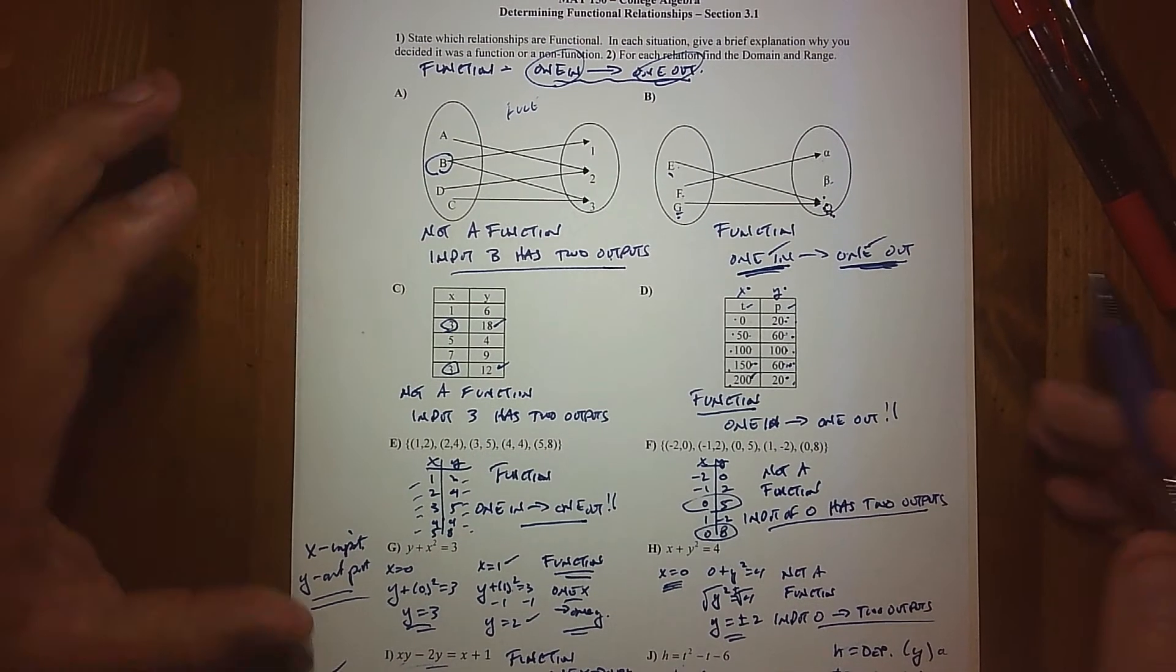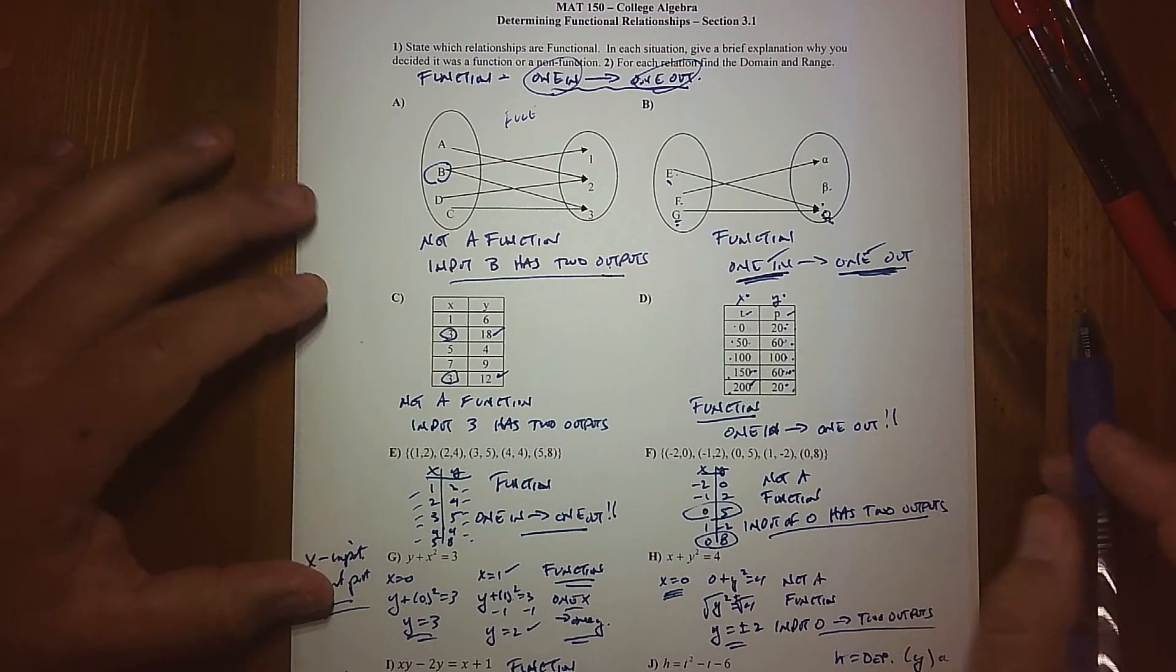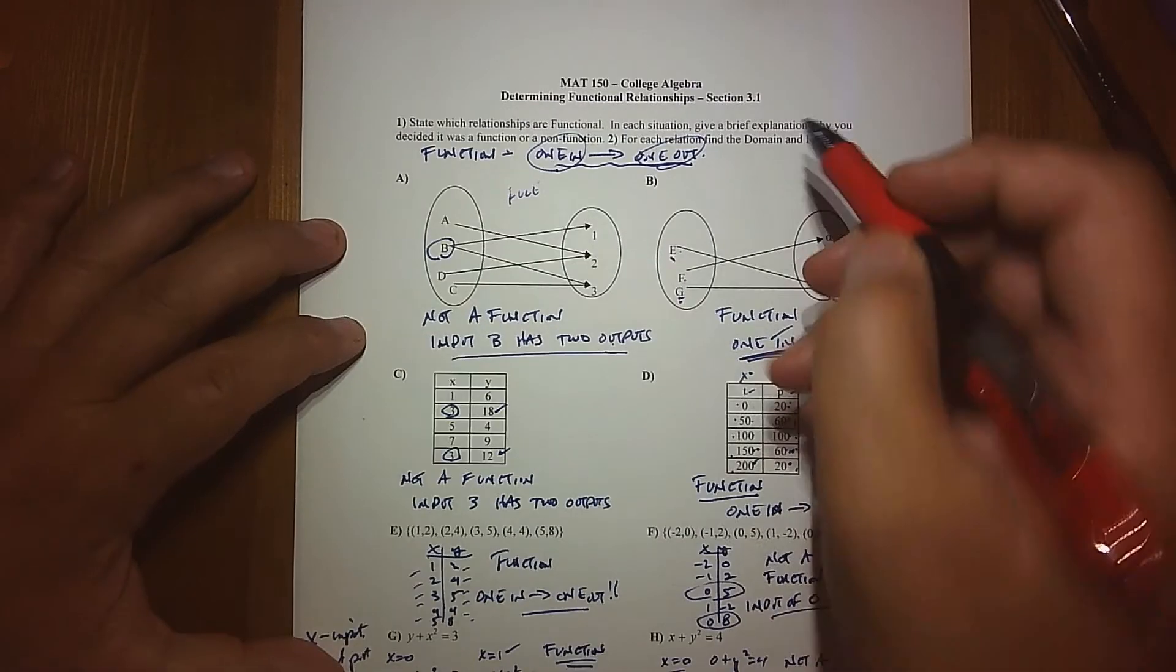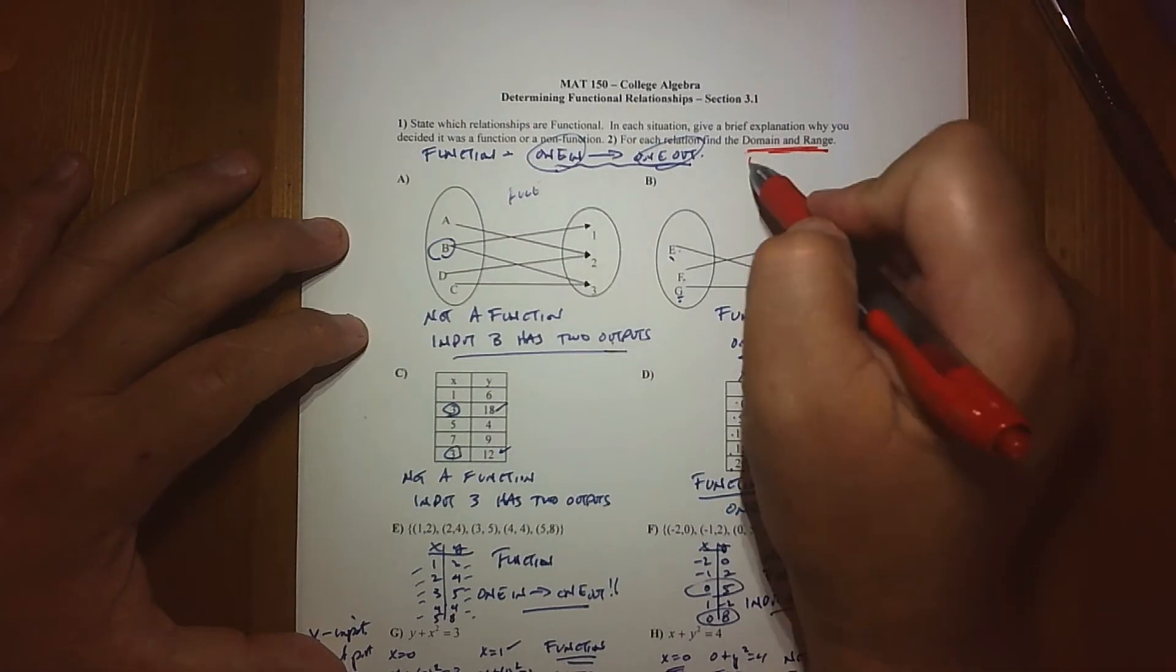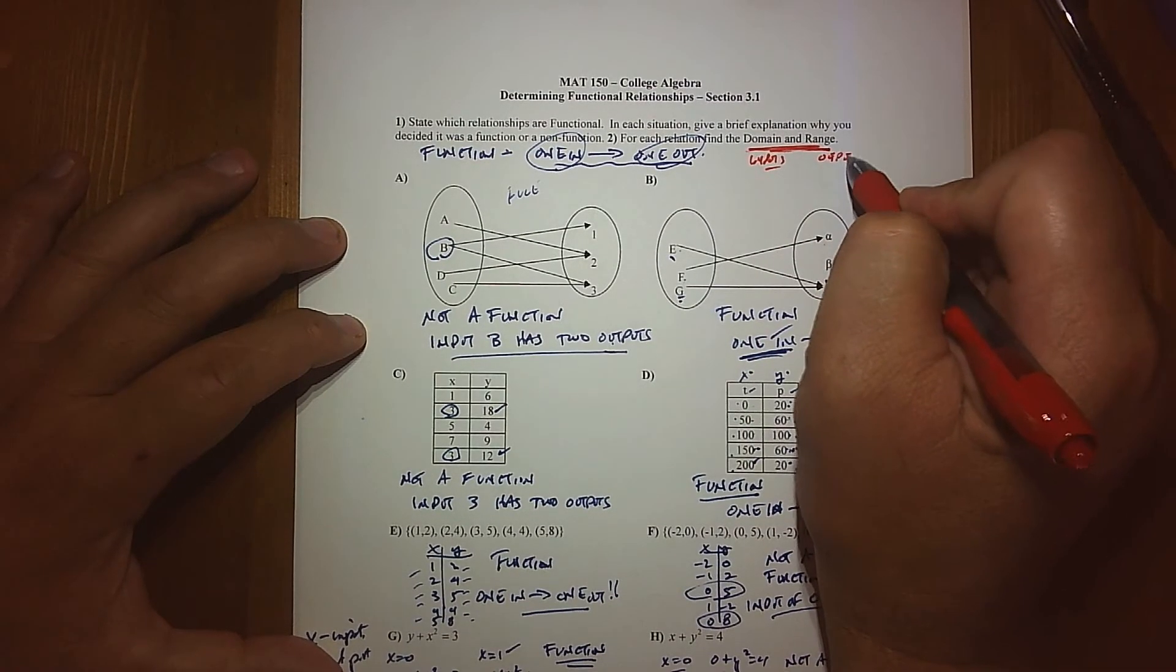Alright you guys, so let's go ahead. I know this worksheet's a little messy, perhaps I should have cut another one, but I think we can get it. I'll just use a different color. So again, now what we're doing is we're talking about domain and range. This is basically my inputs and this is my outputs.